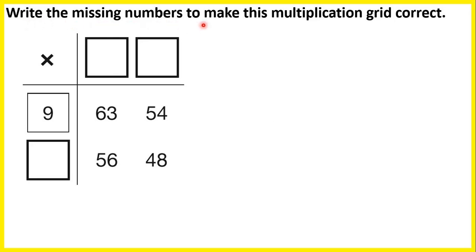Write the missing numbers to make this multiplication grid correct. To get 63, we have 9 times the missing number. So 9 times what is 63? Well 63 divided by 9 is 7, so 9 times 7 is 63. And here we have 54, and that's the answer to 9 multiplied by this number. So 54 divided by 9 is 6, so 9 times 6 is 54.